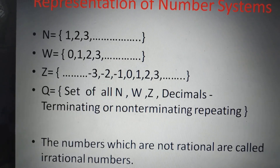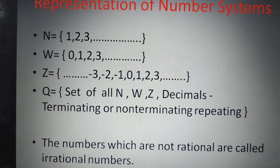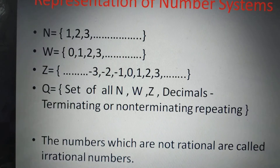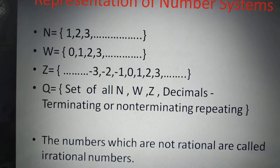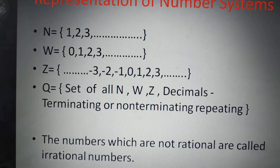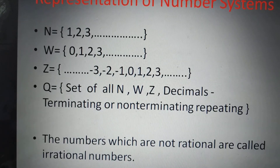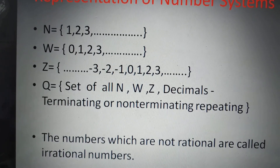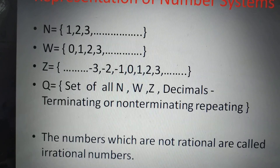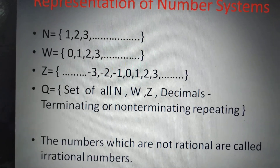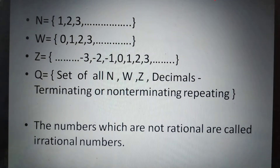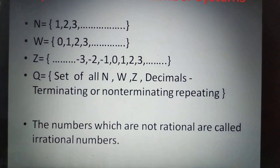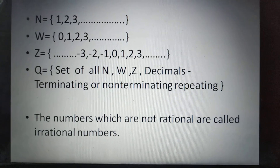Decimals are basically of two types: terminating decimals and non-terminating decimals. Non-terminating decimals are further divided into two types: non-terminating repeating decimals, and non-terminating non-repeating decimals. Decimals that are either terminating or non-terminating repeating belong to rational numbers. Decimals that are non-terminating as well as non-repeating come under the category of irrational numbers.